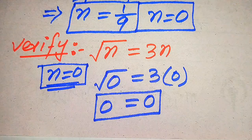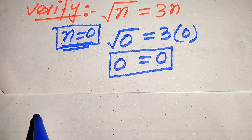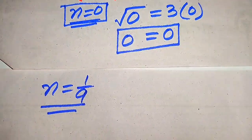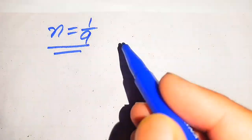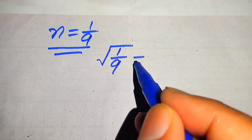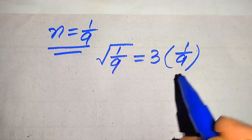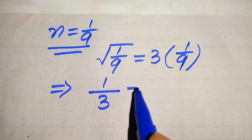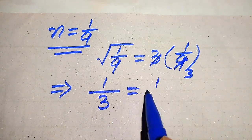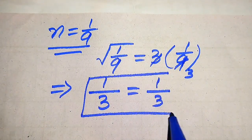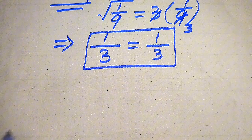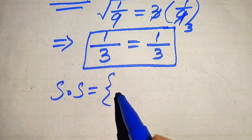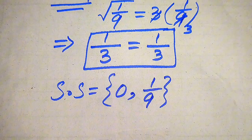Now we verify the second root, n equals 1 over 9. Substituting into the equation gives square root of 1 over 9 equals 3 times 1 over 9. The square root of 1 is 1 and the square root of 9 is 3, so the left side is 1 over 3. On the right, 3 times 1 over 9 equals 1 over 3. Left-hand side equals right-hand side, so both roots satisfy the equation. The solution set is {0, 1/9}.